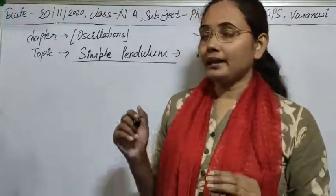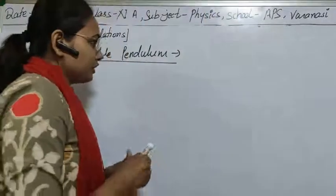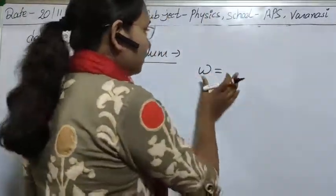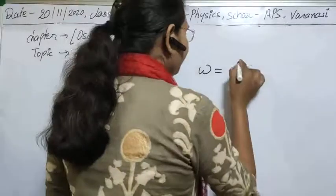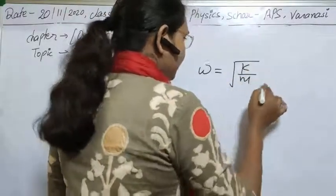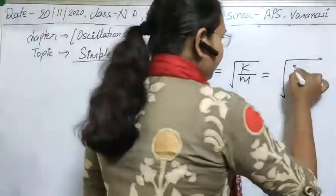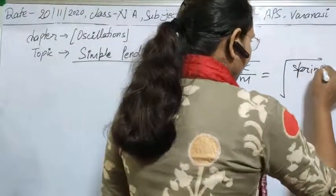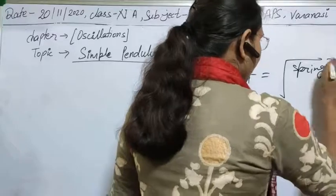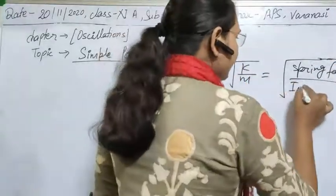One thing I want to correct: omega is equal to the square root of k by m, where k is the spring factor and m is the inertia factor.